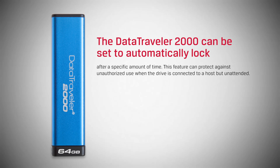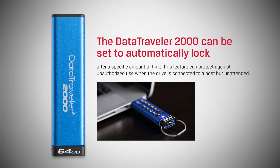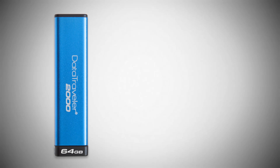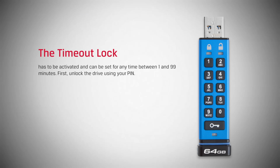The Data Traveler 2000 can be set to automatically lock after a specific amount of time. This feature can protect against unauthorized use when the drive is connected to a host but unattended. The timeout lock has to be activated and can be set for any time between one and ninety-nine minutes.